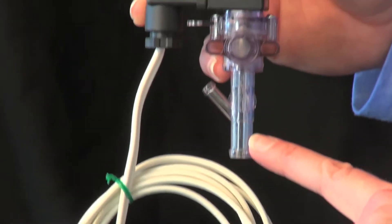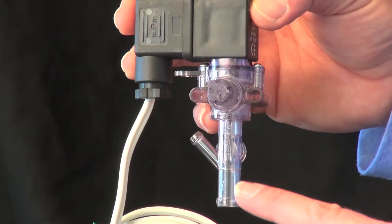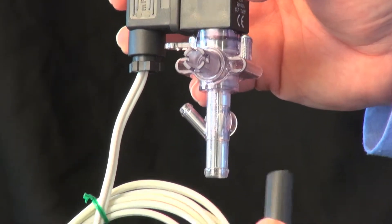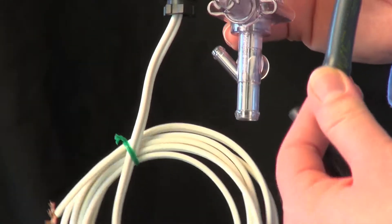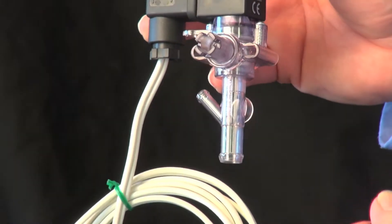This, on the bottom, is the output. So this is going to connect to your 3/8 to quarter inch adapter that comes with the solenoid, to your quarter inch tubing. And this tube will go into your reservoir.